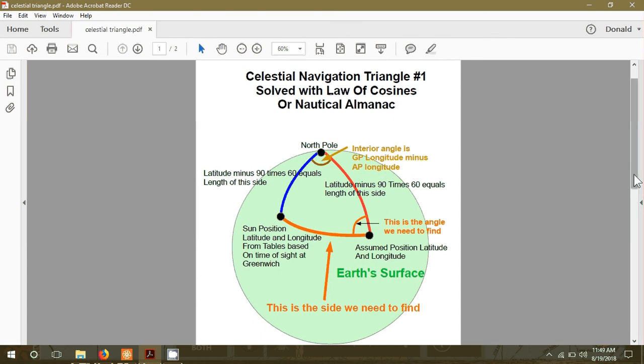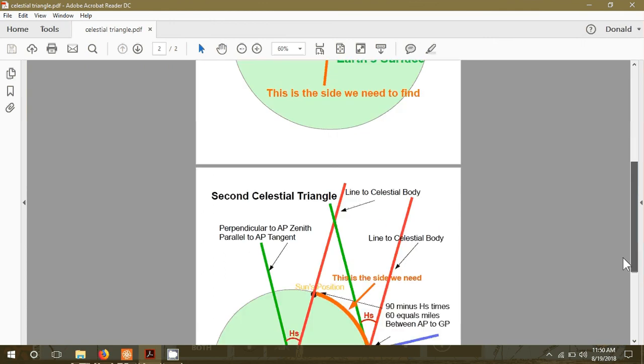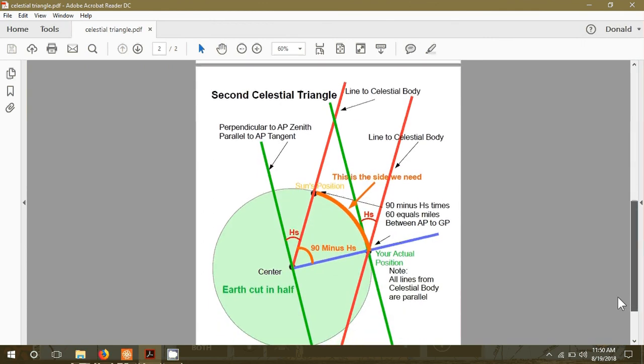We took a sextant sight of the Sun and that sight creates a second triangle. In this triangle, we measure the angle from our horizon to the Sun. The celestial people call that HS, height read by sextant, so I'll call it the HS too, but I have to be careful not to lean too far toward the dark side.